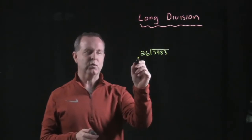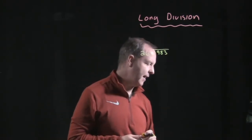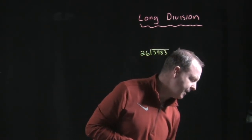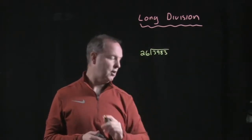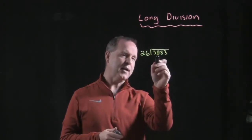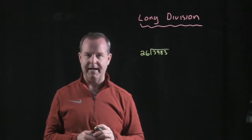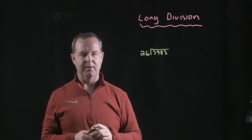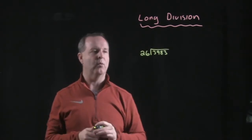So I have 26 dividing into 3,983. 26 is called my divider, 3,983 is called my divisor. I don't remember those all the time, but it's good to remember once in a while.